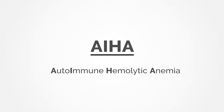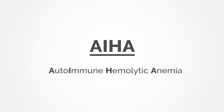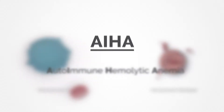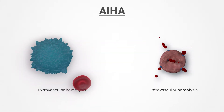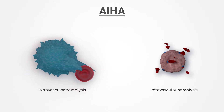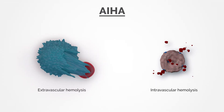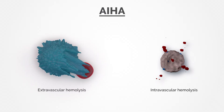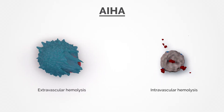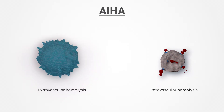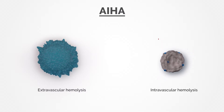Autoimmune hemolytic anemia, AIHA, is a group of rare blood disorders characterized by the body's own antibodies causing red blood cell destruction, a process known as hemolysis.